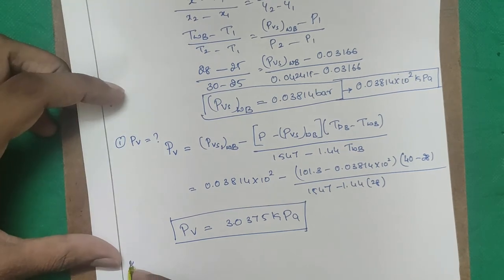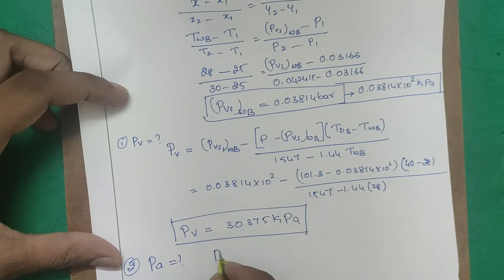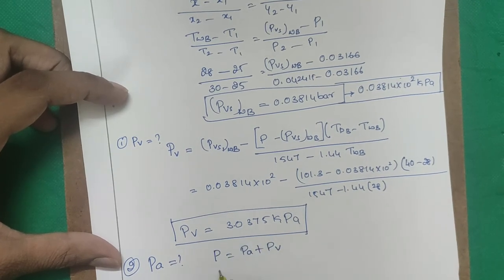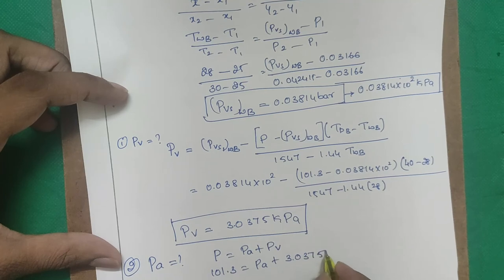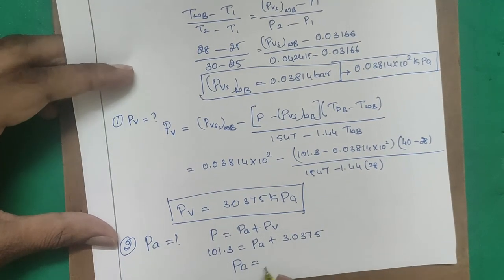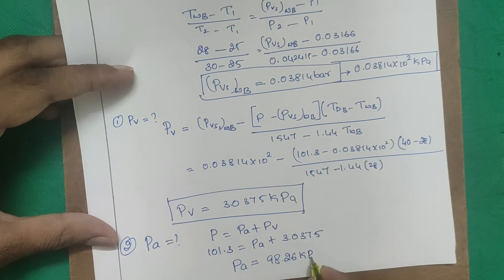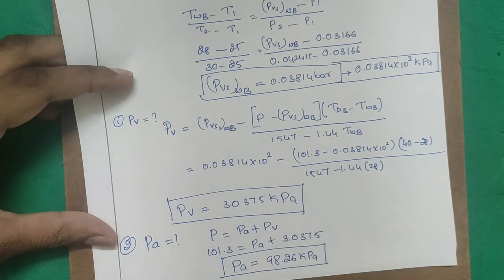Step 2 — Find PA using Dalton's law: 101.3 = PA + 3.0375 → PA = 98.26 kPa.